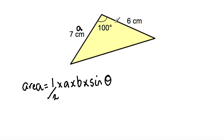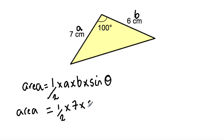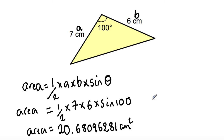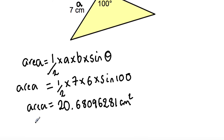I'm going to label one side A and the other side B — that's all the information we need. Substituting the values: area equals one half times 7 times 6 times sine 100. Plugging it into the calculator, the area of this non-right-angle triangle is 20.68096281 centimetres squared. Rounding to one decimal place, area equals 20.7 cm² (1 d.p.).